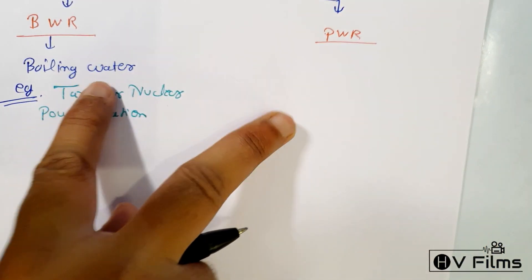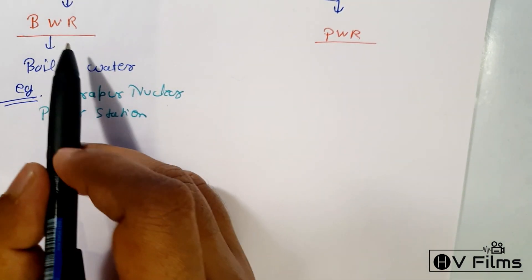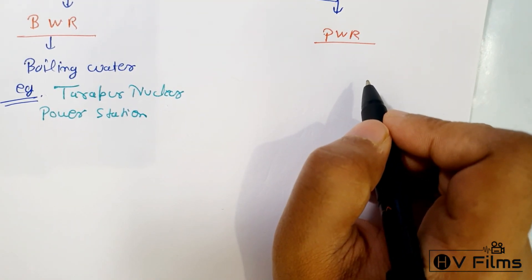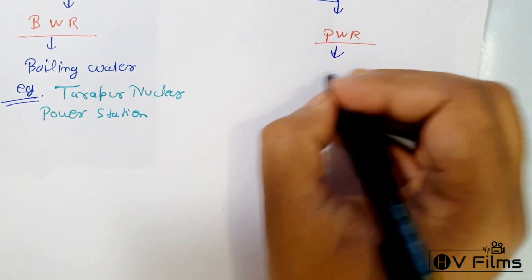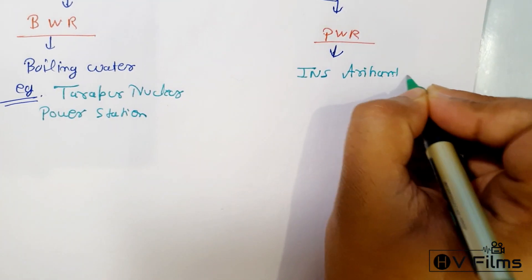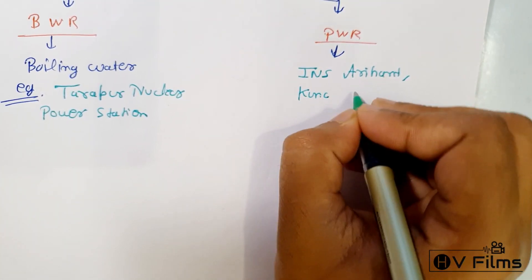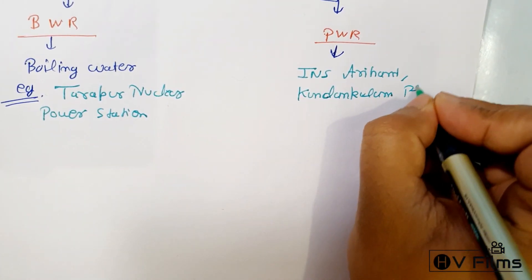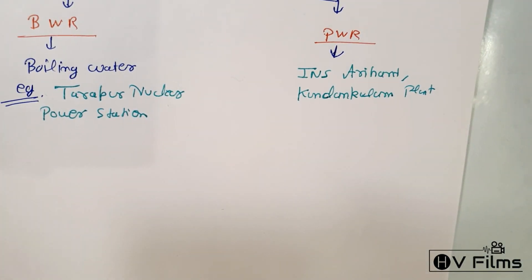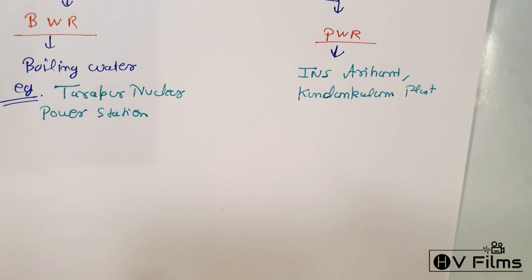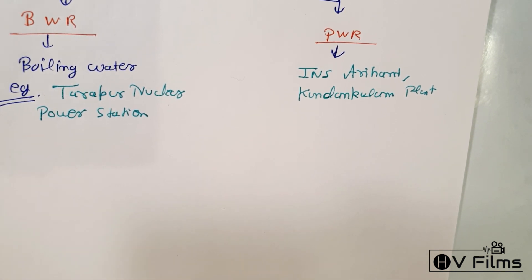The basic difference between the two: in the boiling water reactor there is no steam generation via a secondary loop, but in the PWR there is a steam generation through a secondary loop. Examples of PWR include INS Arihant and the Kudankulam plant in Tamil Nadu.